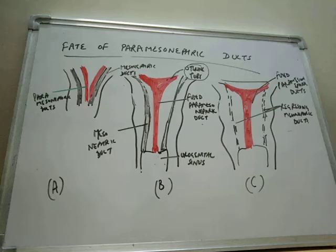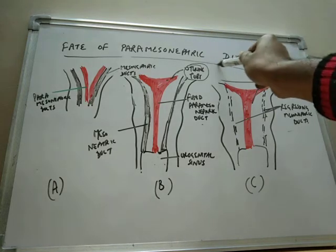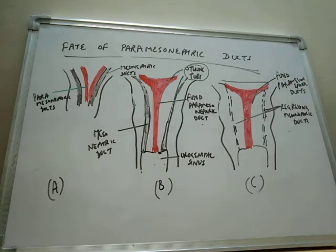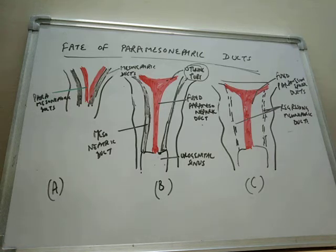While in males, the reproductive structures are mainly formed from the mesonephric ducts. This completes the fate of paramesonephric ducts.